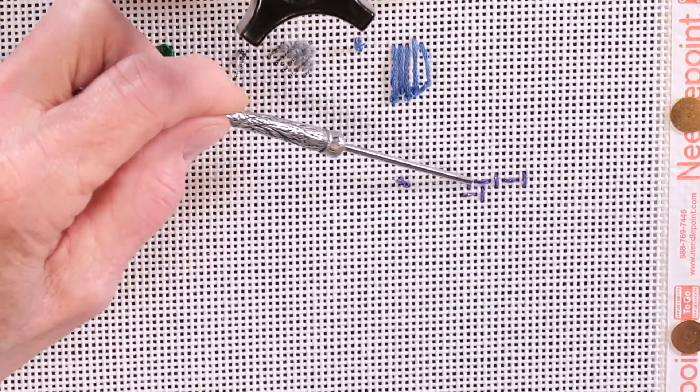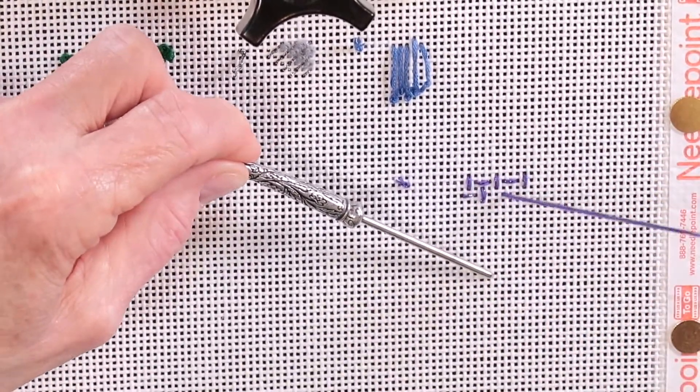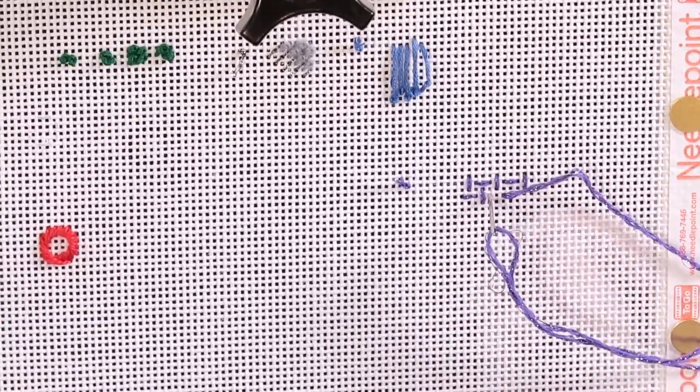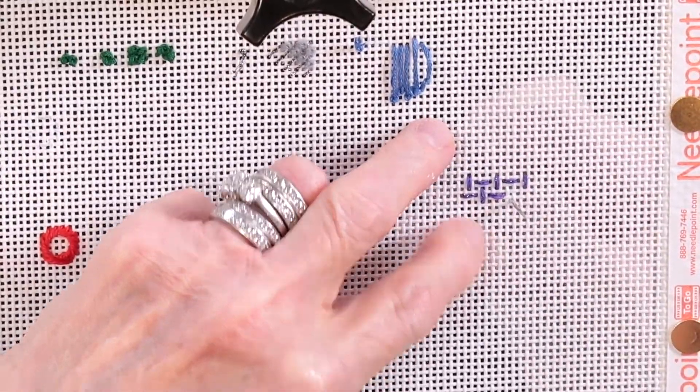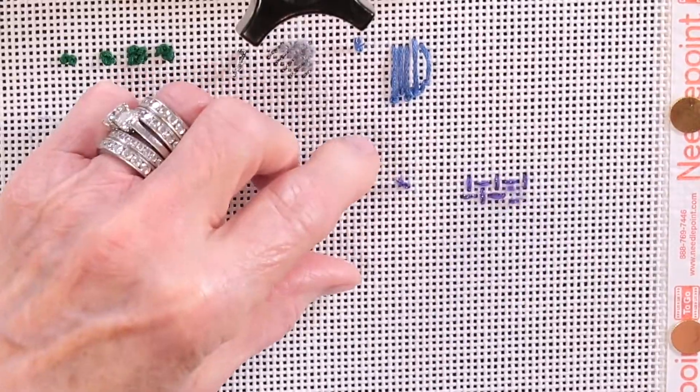Below this row you're going to do it vertically. I'm just using a laying tool. You don't really need a laying tool, I just use it as a crutch. Laying tools have many purposes and one of them is it allows me to hold something additional in my hand.